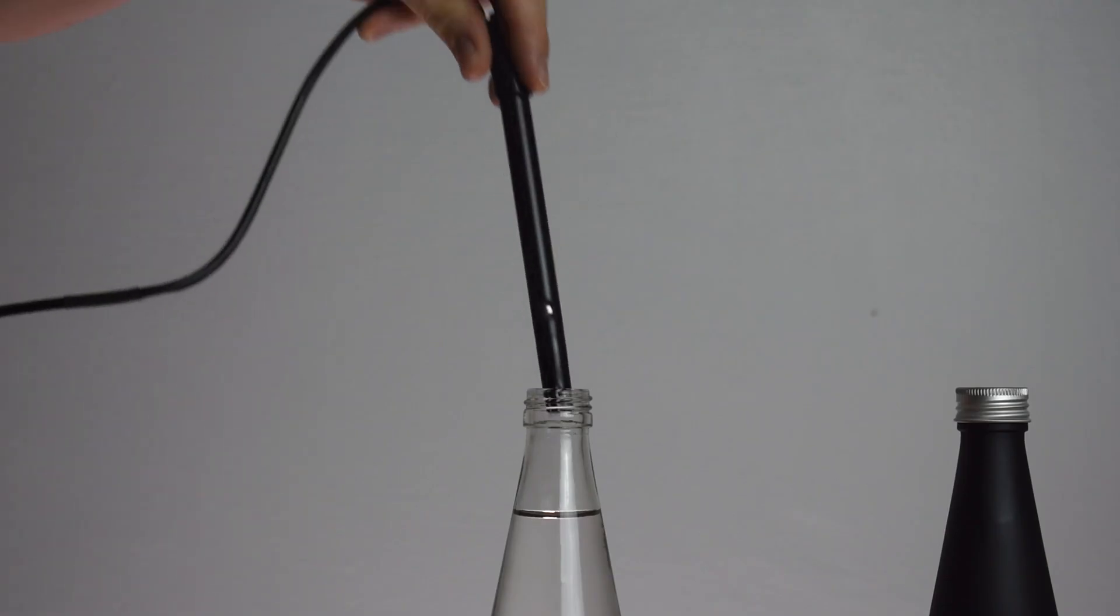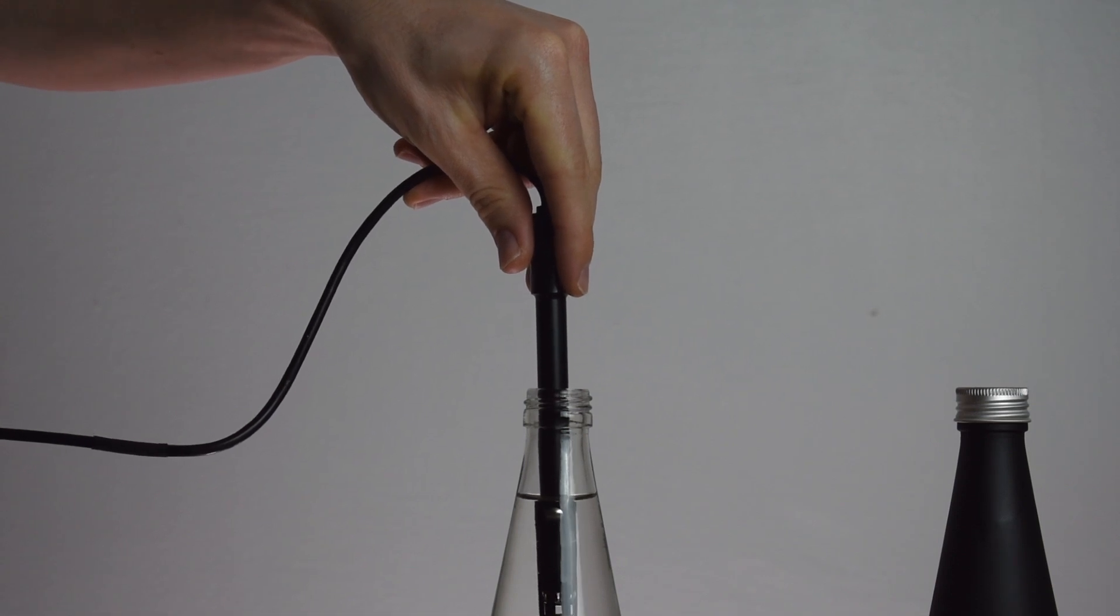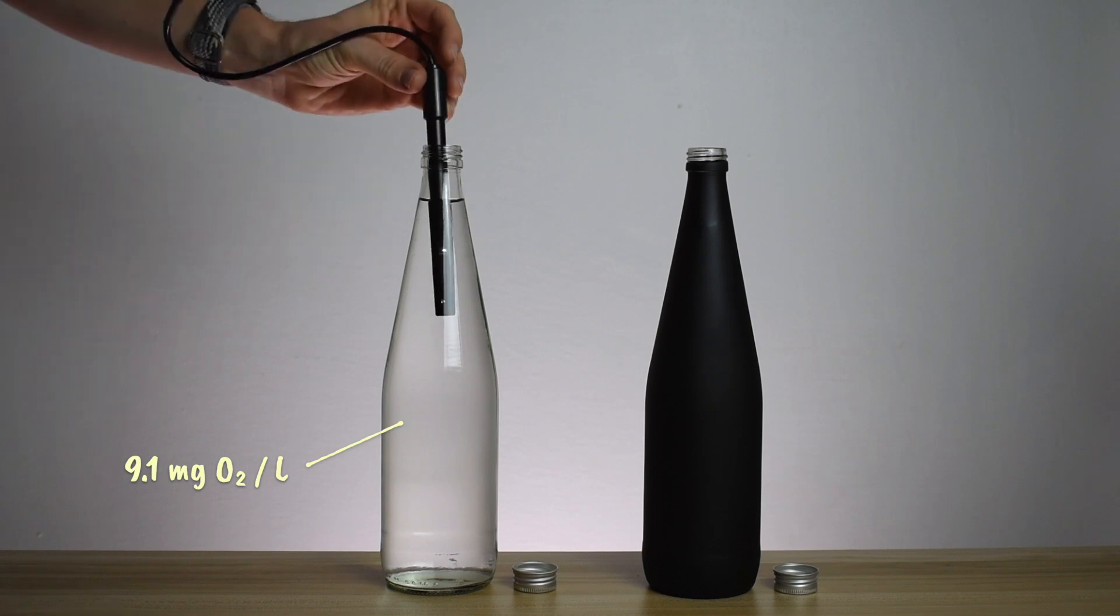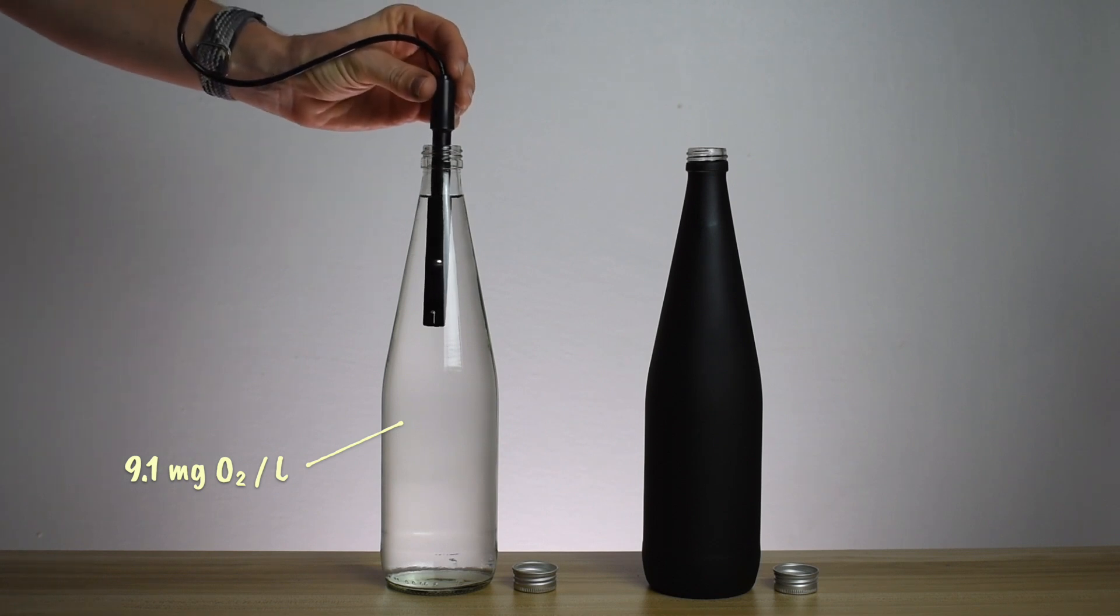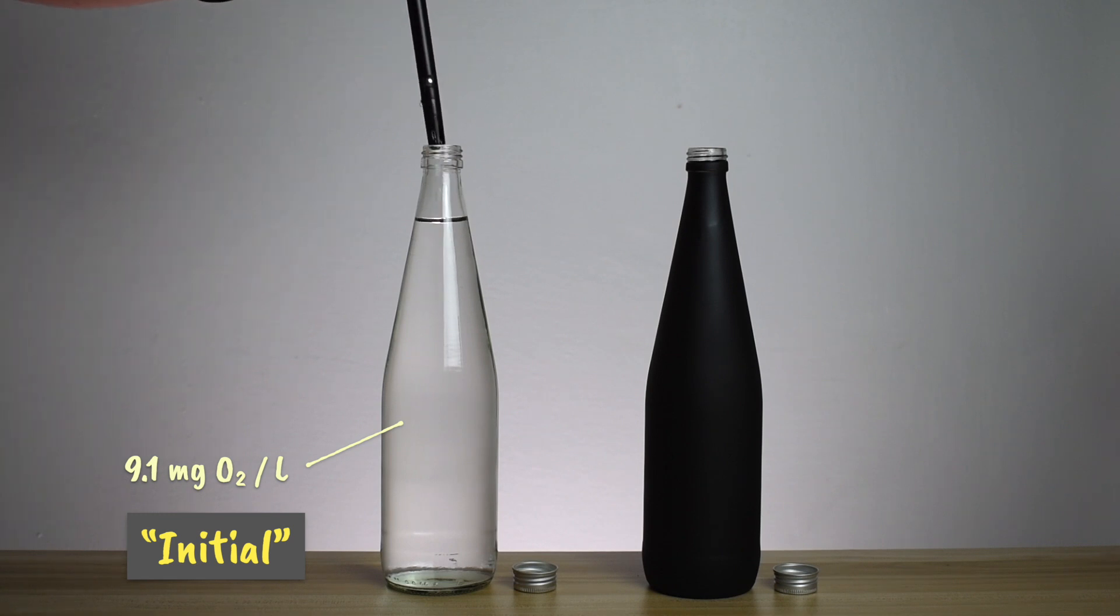As soon as you take the samples, measure the dissolved oxygen level with the dissolved oxygen meter. This water has a level of 9.1 milligrams of oxygen per liter. This oxygen level we'll call initial. You only need to do this measurement for one of them because they should logically have the same oxygen levels if they came from the same place.